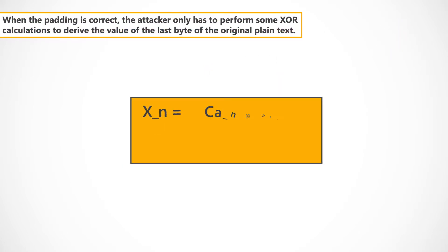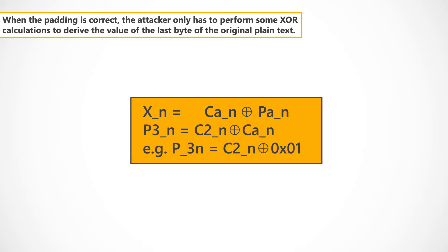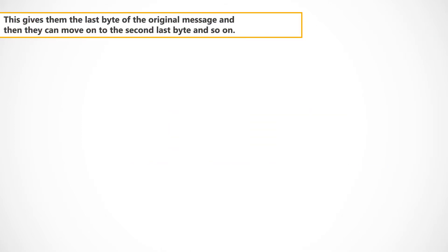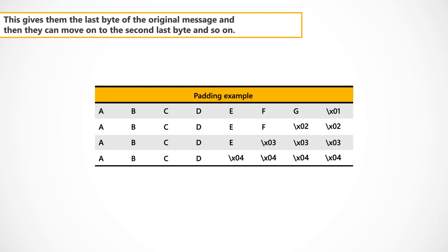When the padding is correct, the attacker only has to perform some XOR calculations to derive the value of the last byte of the original plain text. This gives them the last byte of the original message, and then they can move on to the second last byte, and so on.